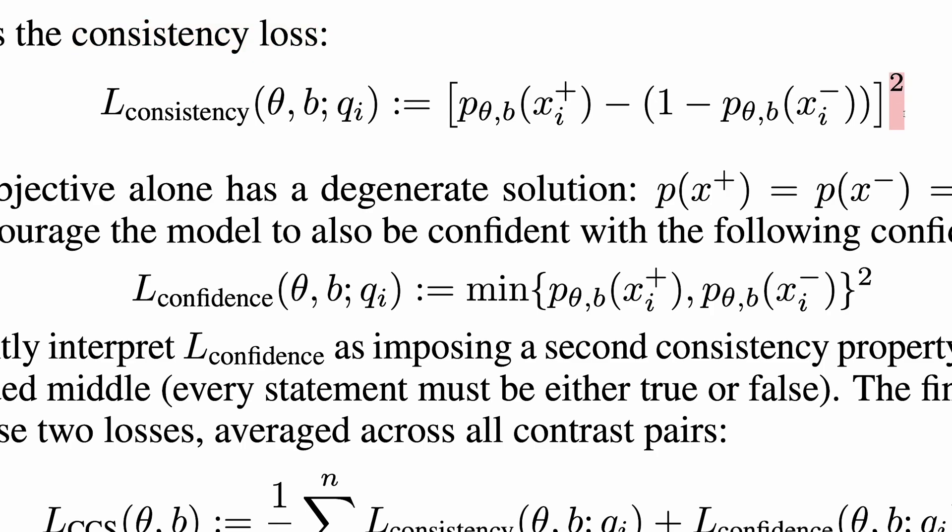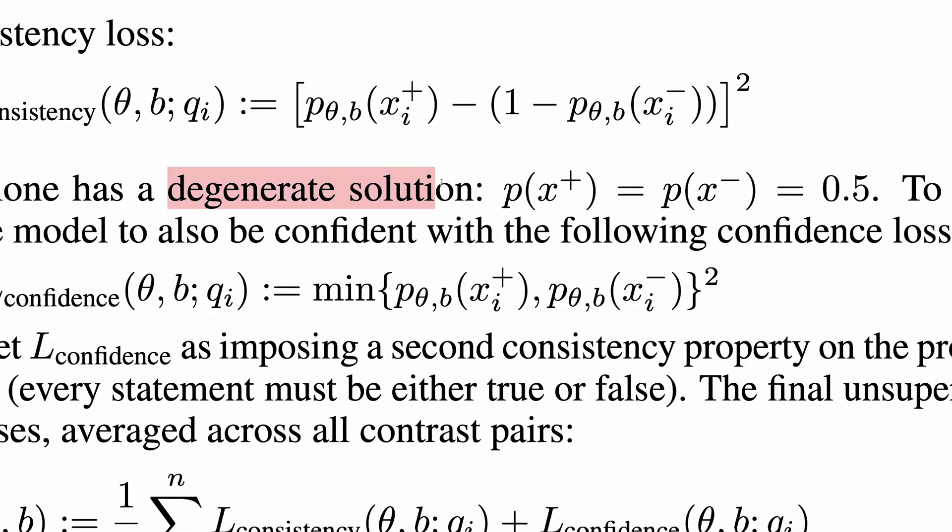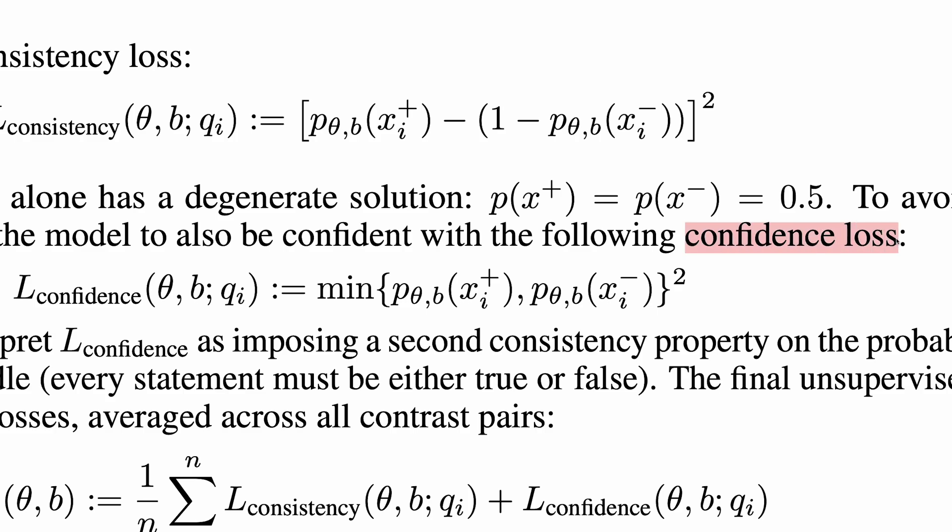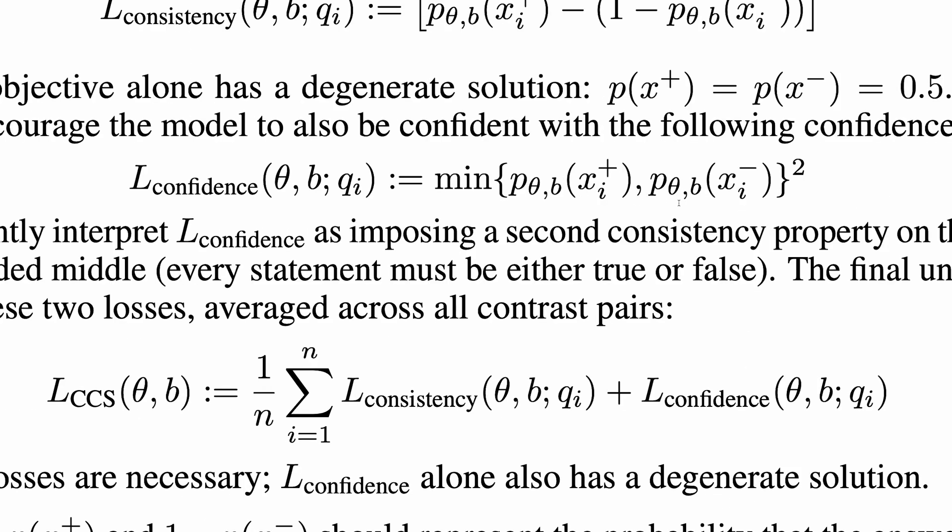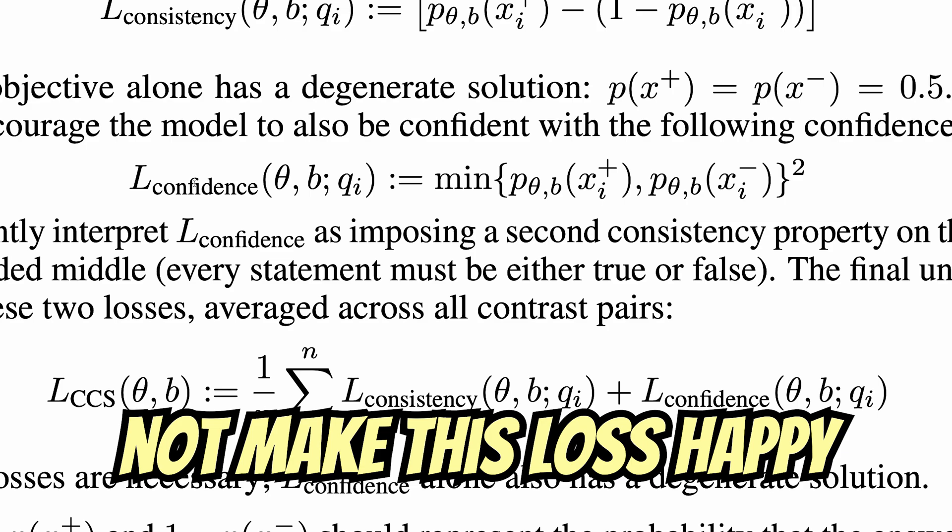The first loss is the consistency loss. You can see that this minimizes the squared difference between the predicted probability that the yes statement is true, and one minus the predicted probability that the no statement is true. To avoid the degenerate solution of this loss, where the probe maps the probability of yes statements and the probability of no statements to 0.5, regardless of whether it believes they are true, a confidence loss is used. This encourages the model to assign a low probability to at least one of the statements. Giving them both 0.5 will not make this loss happy.